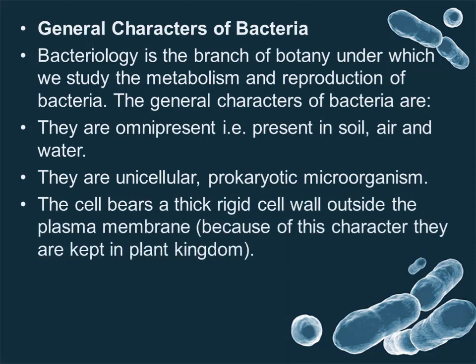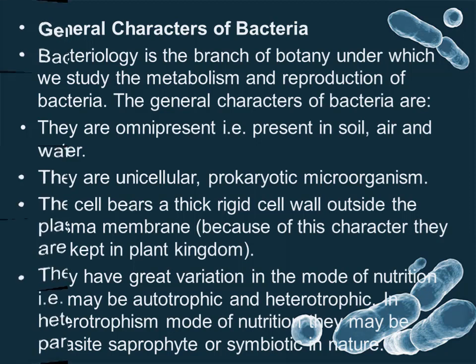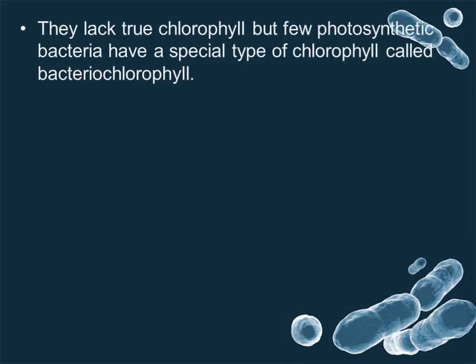The cell bears a thick rigid cell wall outside the plasma membrane; because of this character, they are kept in the plant kingdom. They show great variation in the mode of nutrition — they may be autotrophic or heterotrophic. In the heterotrophic mode of nutrition, they may be parasitic, saprophytic, or symbiotic in nature.